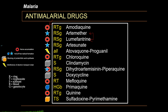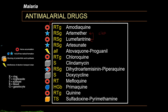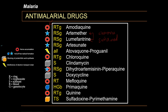Together with artemether is lumefantrine. It is also converted to its active metabolite, accumulates in the parasite food vacuole, and interferes with heme detoxification. While artemether's main function is the rapid clearance of parasites, lumefantrine provides sustained clearance of parasites — hence the artemether-lumefantrine combination drug works as a one-two knockout punch.